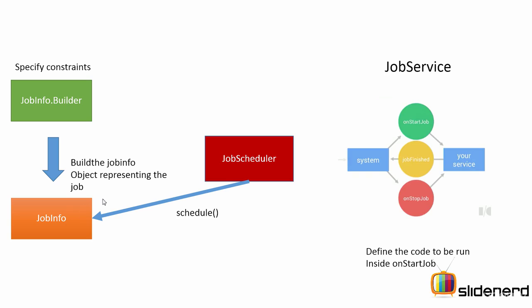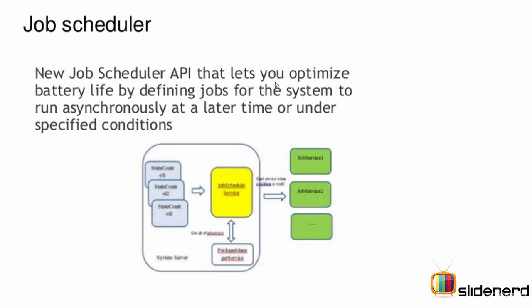Once you call JobScheduler.Schedule, the JobService is triggered every time the constraints are met, and your code executes inside the OnStartJob method where your background task is performed. The JobScheduler will automatically consider the several jobs that exist and try to schedule them in such a way that the impact on the battery is minimal.